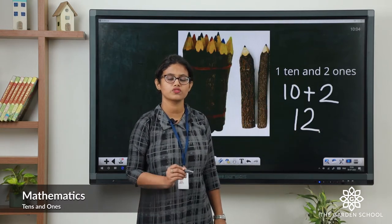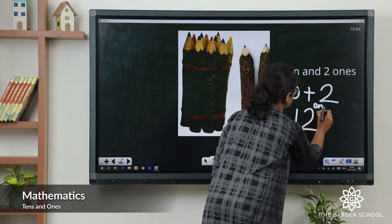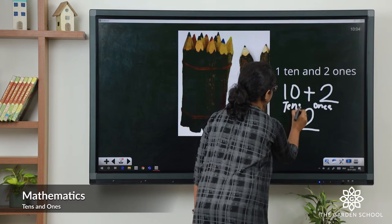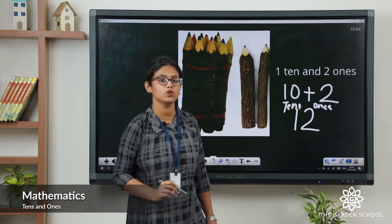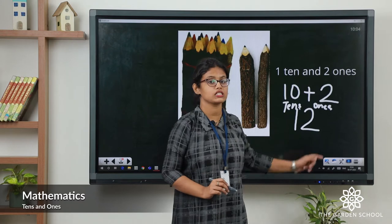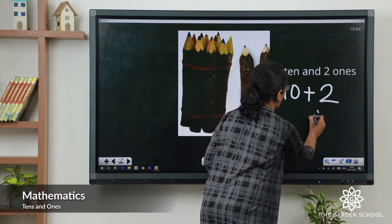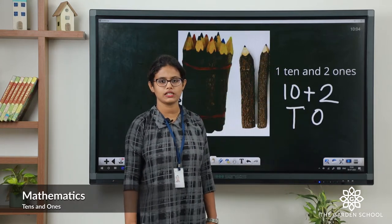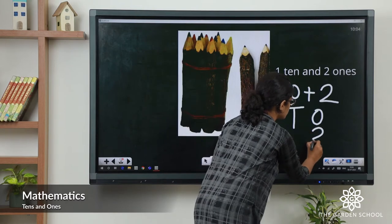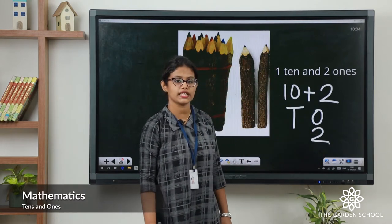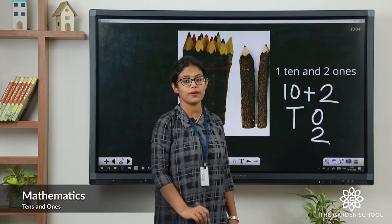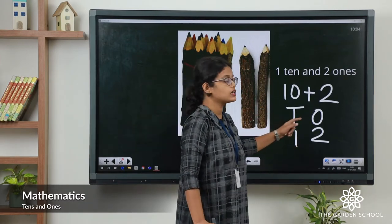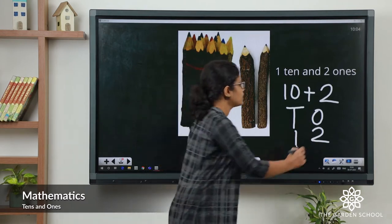So the place value of 2 is ones and the 1 is tens. We always calculate place value from the right, that is from the ones place. So in ones place how many pencils? 2. Then in tens place, 1 bundle of 10 pencils, so 1. So the number is 1 ten and 2 ones — it makes number 12.